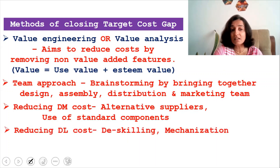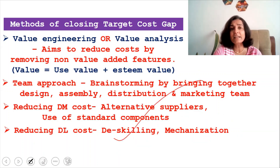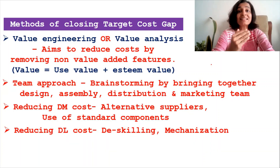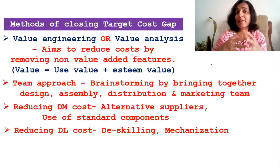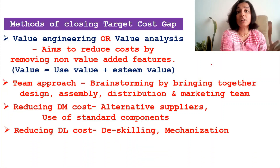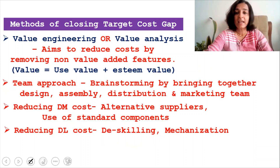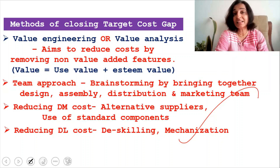The next method is reducing the direct labor cost either by de-skilling or by mechanization. De-skilling means substituting skilled labor with semi-skilled or unskilled labor — this is possible by introducing technology. If you're assembling a product, you don't need top-class engineers; a semi-skilled laborer can operate the machine which assembles according to specification. Mechanization means using more machines and less labor, which means direct labor costs will be drastically reduced, and through mechanization we can achieve large-scale reduction.